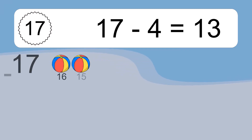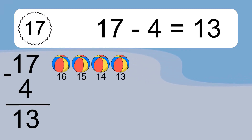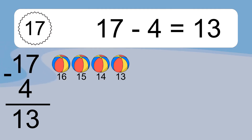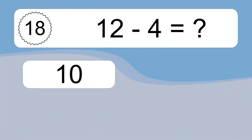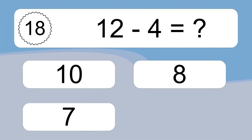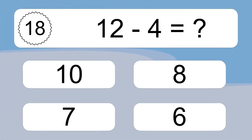17 minus 4 equals what? 17 minus 4 equals 13. Let's count it. 16, 15, 14, 13.